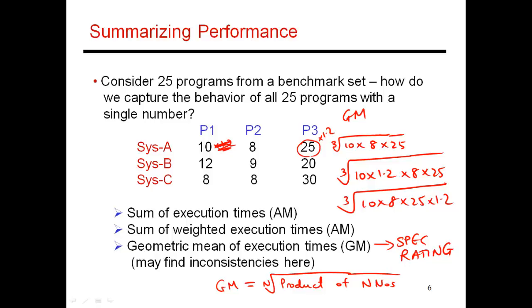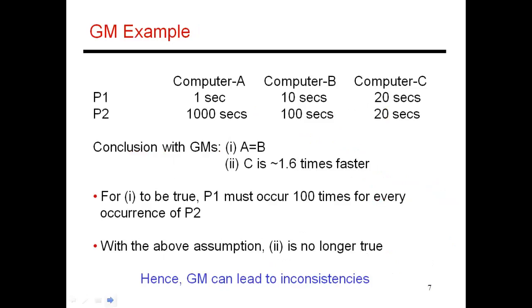The disadvantage of using geometric means is you are multiplying execution times, and that does not correspond to any real or natural process. Normally, when you run and measure a workload, you are running programs sequentially. You are adding up your execution times. So taking the product of execution times does not seem like a natural process, and that leads to inconsistencies in certain cases. I'll show you that with an example on this next slide.